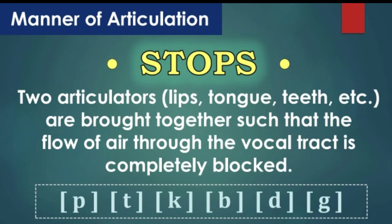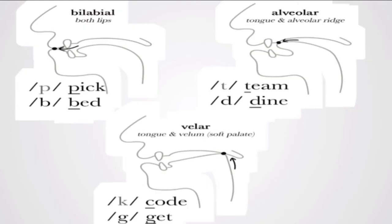They are called stops because the air is completely blocked, and plosive consonants because the air on release produces a kind of explosive sound. For alveolar plosives, the air is completely blocked behind the alveolar ridge and then released suddenly into the atmosphere.